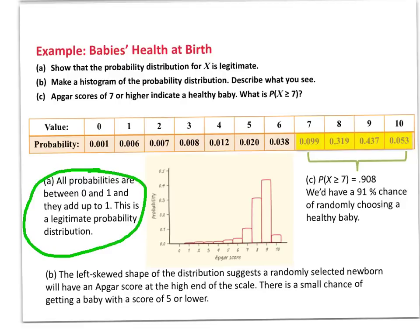If we take this data and make a graph, we can see that the data is approximately normal but skewed left. That means most babies score an Apgar score somewhere between 7 and 10, and very few babies have a score of 5 or lower.